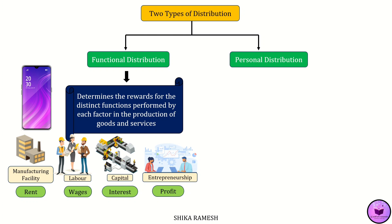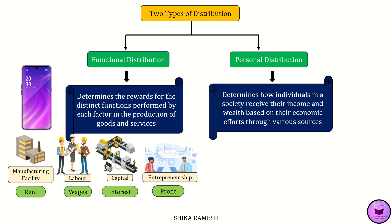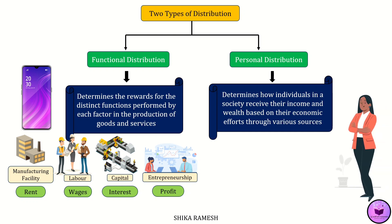The profits received for the successful management of smartphone production are also part of functional distribution. Now coming to personal distribution — it is about how individuals in a society receive their income and wealth based on their economic efforts and personal earnings through various sources.